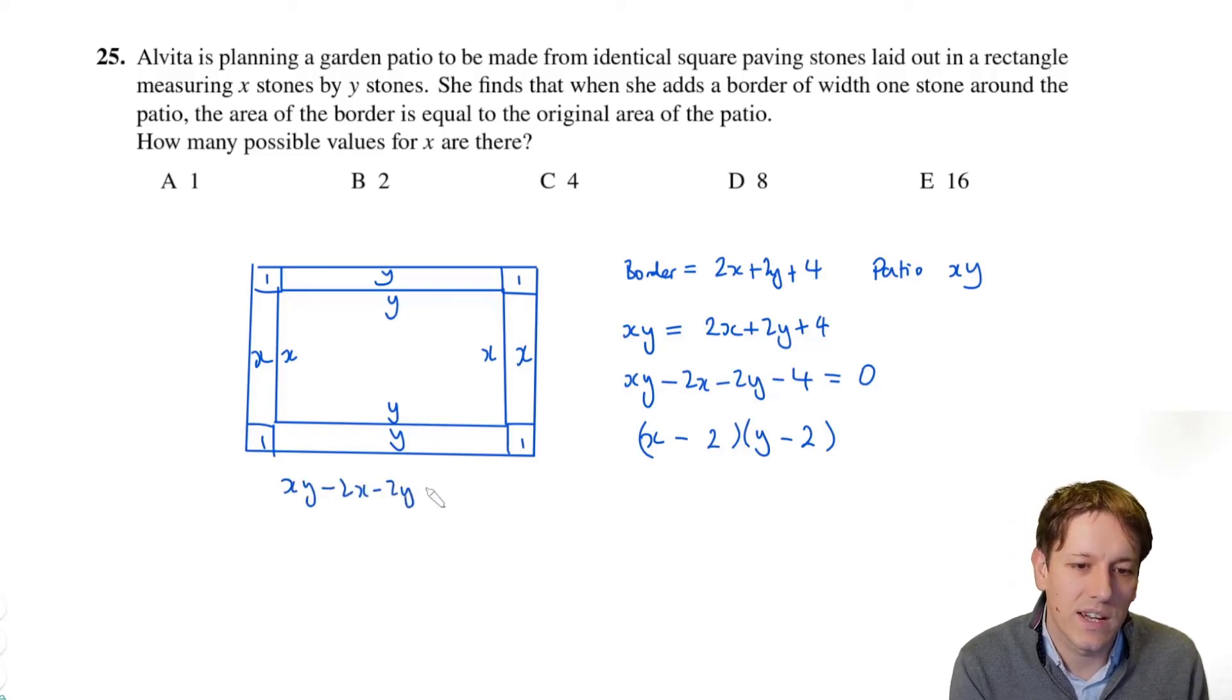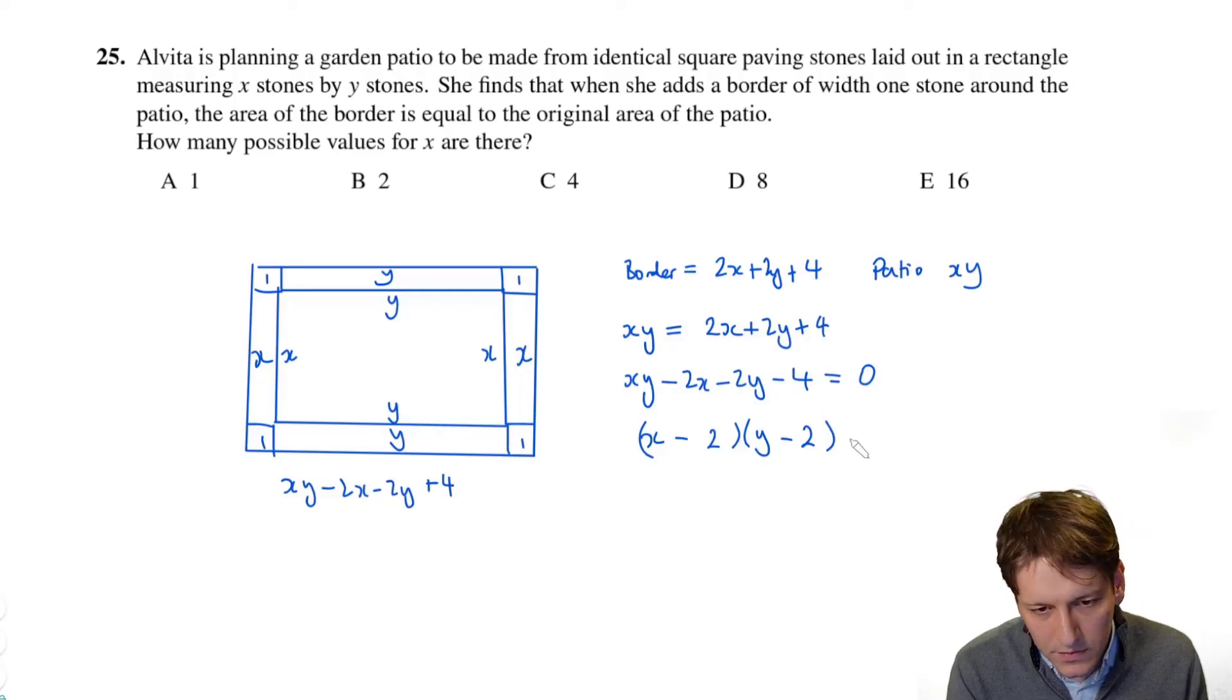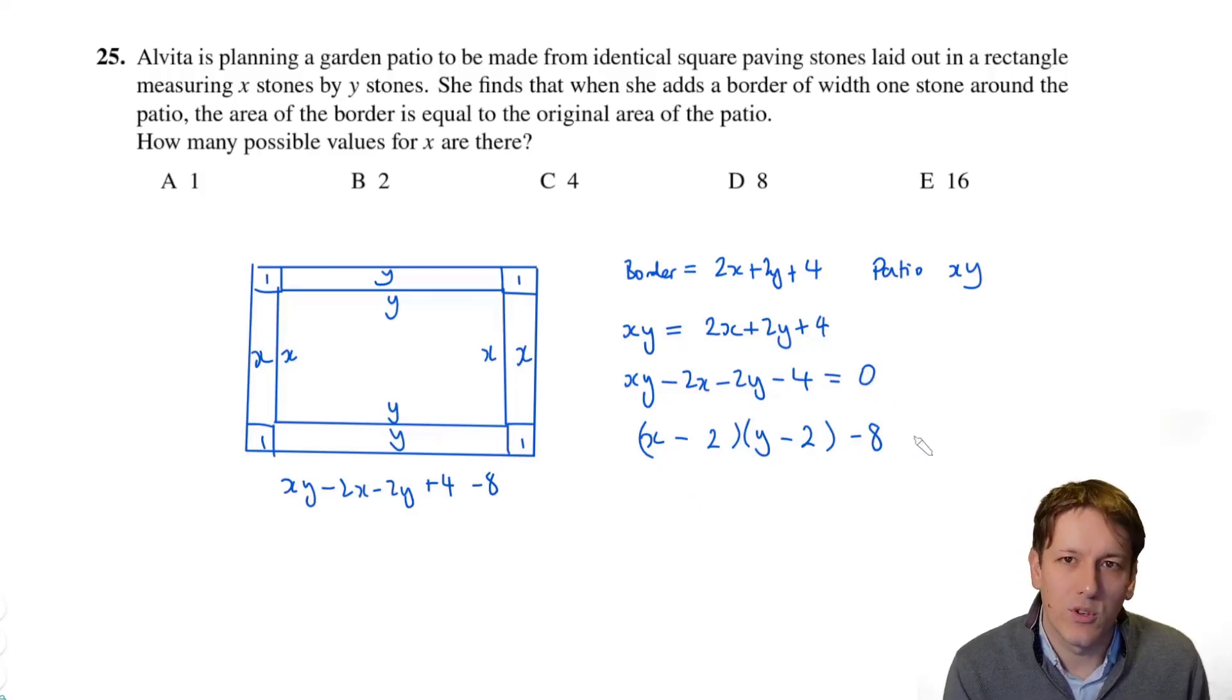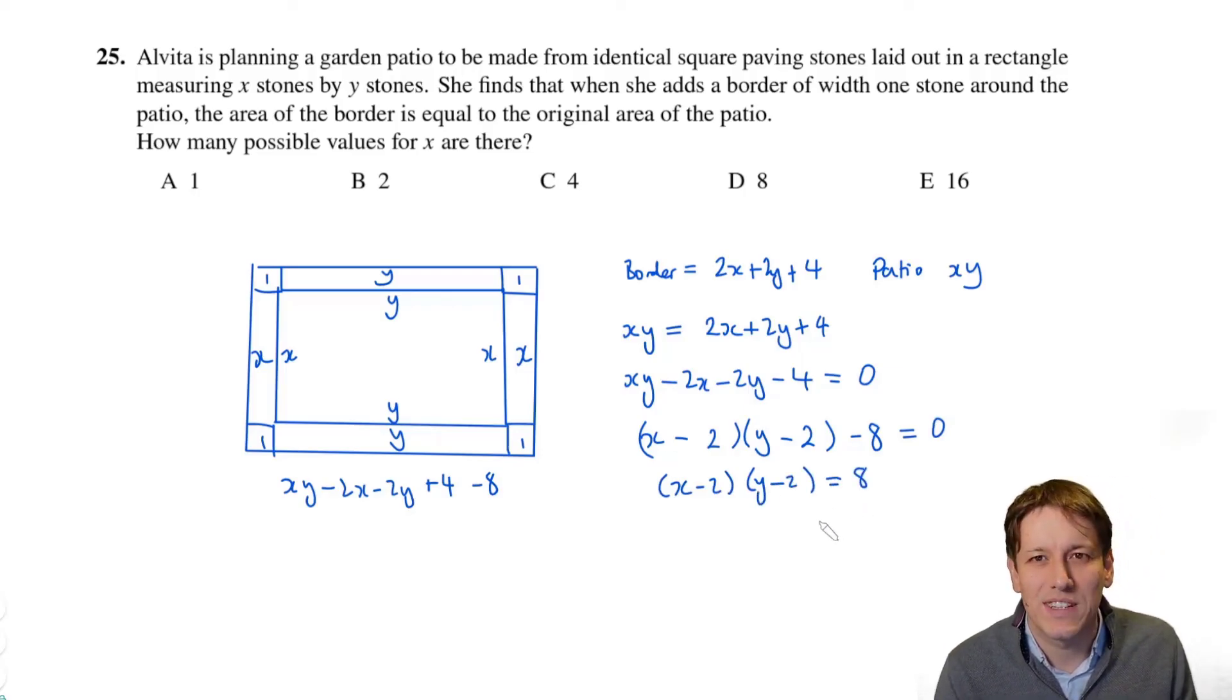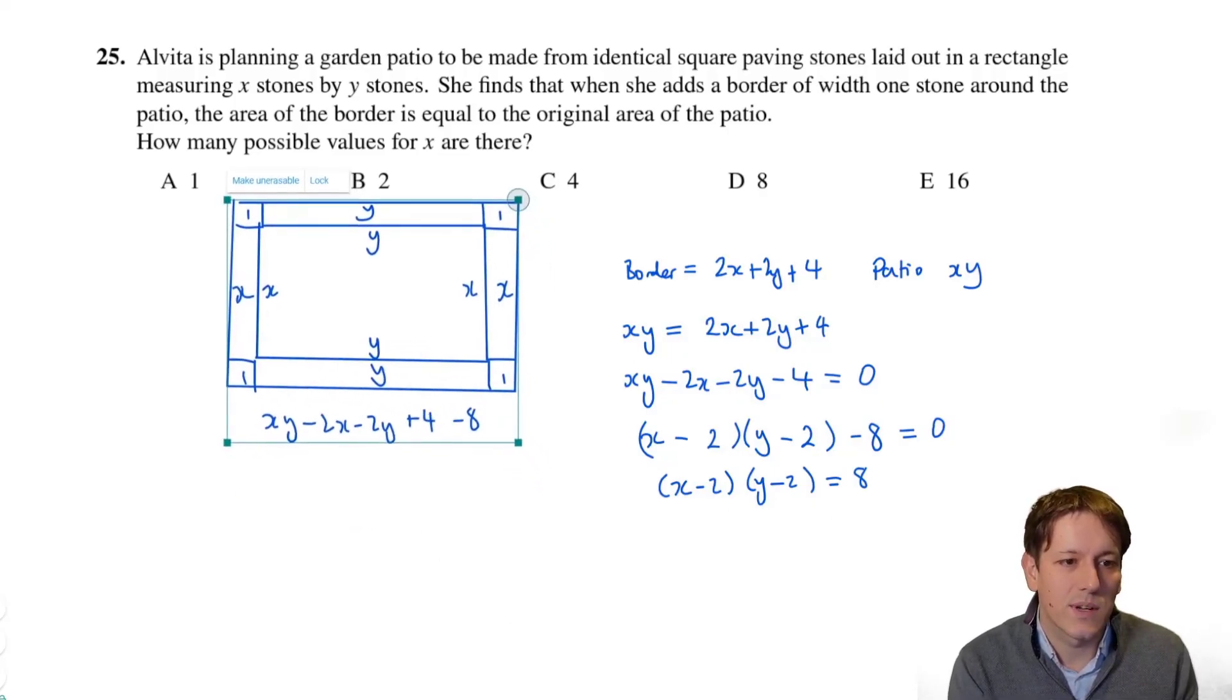So I'm going to have to subtract 8 here to make this the same as this. Have a look at that carefully and make sure you understand that's a bit like the sort of logic we do when we do completing the square, if you've covered that. Not a topic needed for the IMC though. Right, so if we just move the 8 to the other side now, so again a bit different to a quadratic here because we're not putting equal to zero factorising and solving like that. We're putting the 8 back onto the right hand side and we're now using the fact that x and y are whole numbers, right, because it's x stones and y stones. So I've got two numbers that multiply together to give 8 and that's the values of x minus 2 and y minus 2 here.